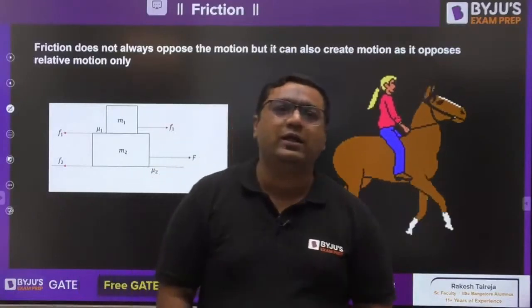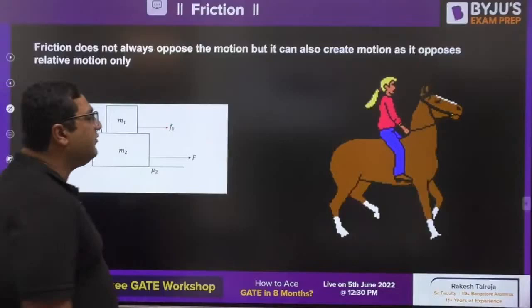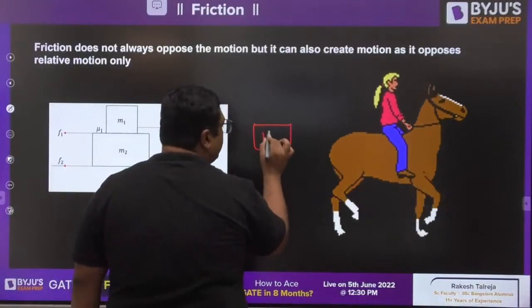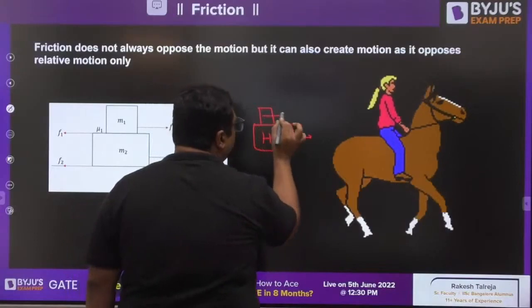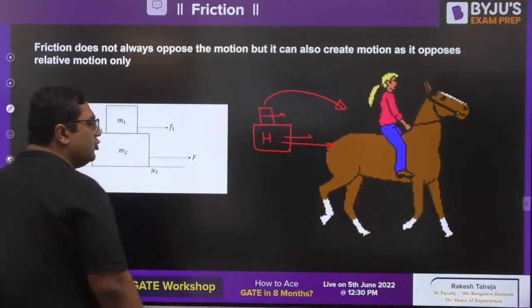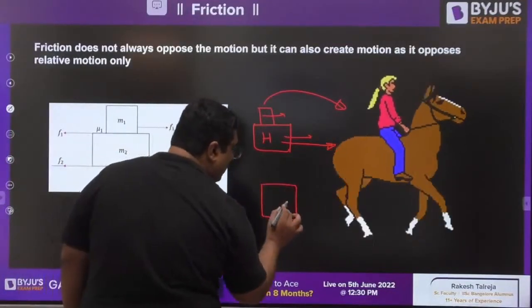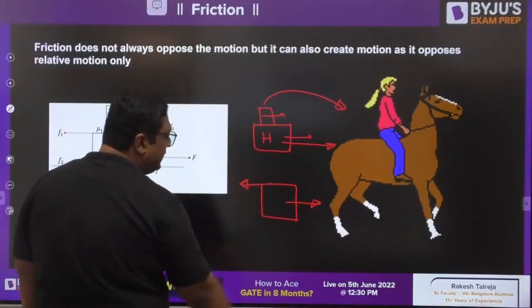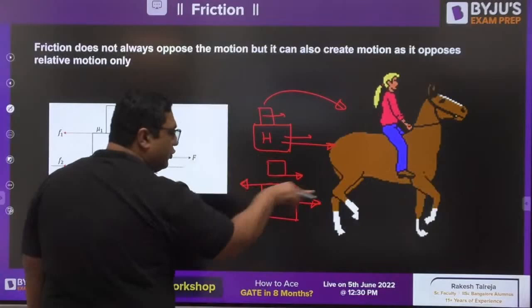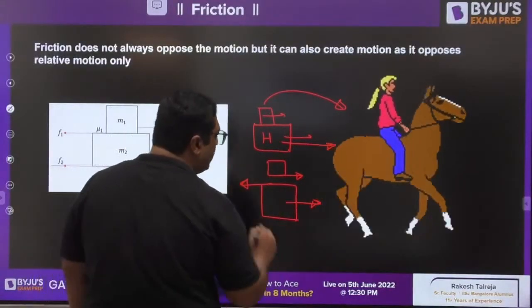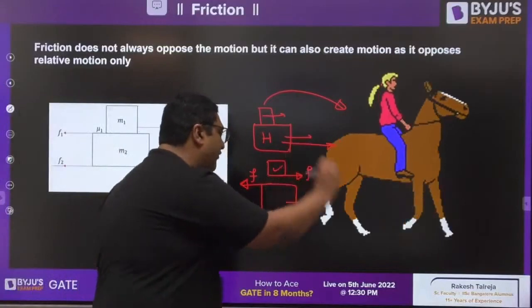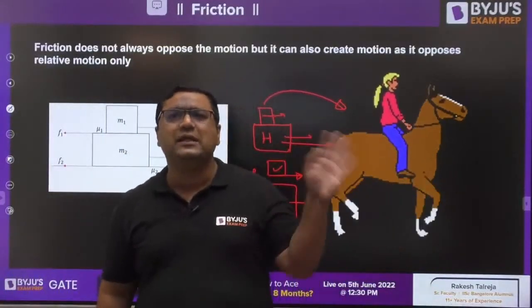Just like and share the session so that other students can also reach here. We discussed that whenever a person is sitting on a horse, if the horse is moving and reaches 5 kilometers, the person will also reach 5 kilometers. When the horse moves in this direction, friction acts in the forward direction on the person because friction opposes relative motion. For this small block, friction will try to convince the body to go in this direction so that relative motion between the bodies can be stopped. So for this body, friction is actually creating the motion.